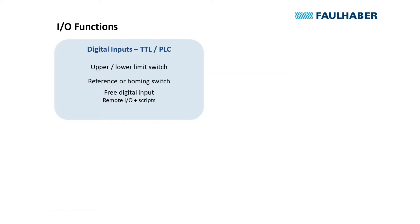The overview of what can be done using the discrete IOs: we have the digital inputs, which would usually be used either to connect limit switches — which could also be used for a homing sequence — or to use them as free digital inputs within a basic script that can be executed in the motion controller.